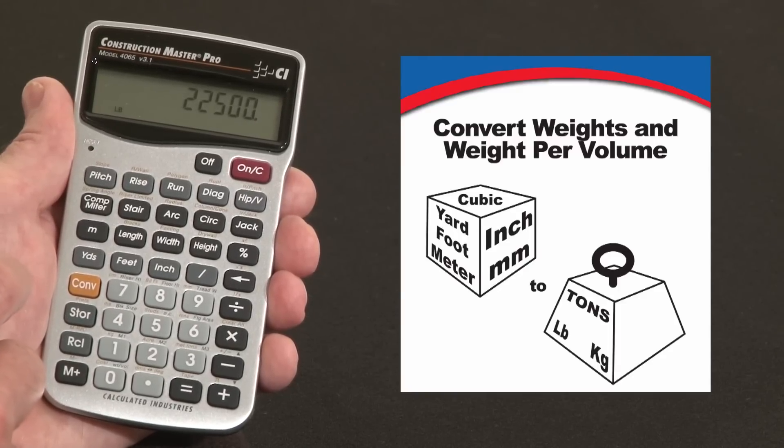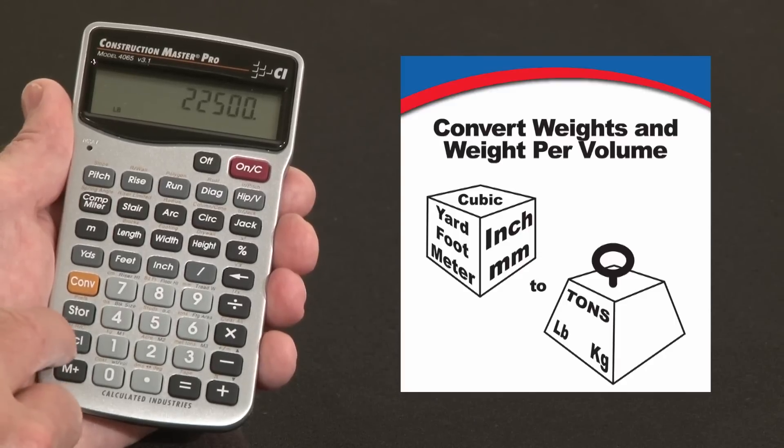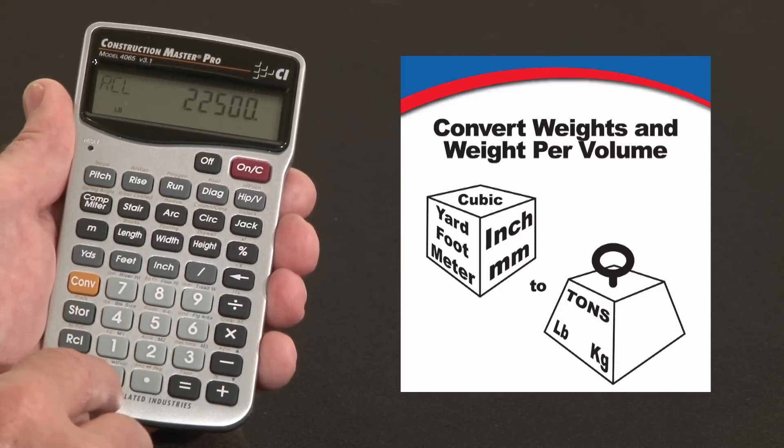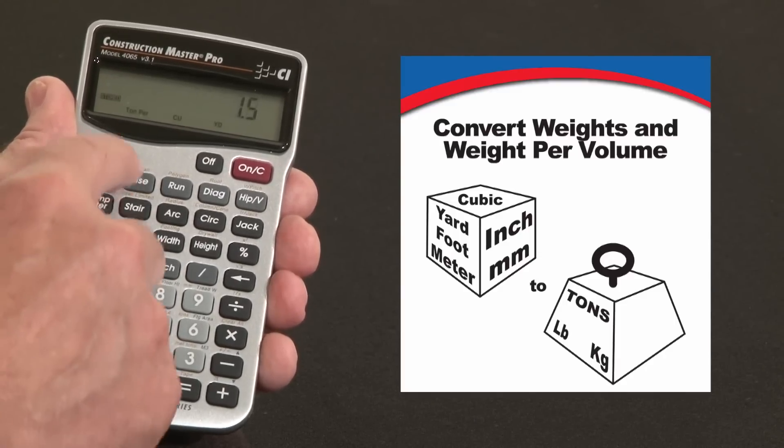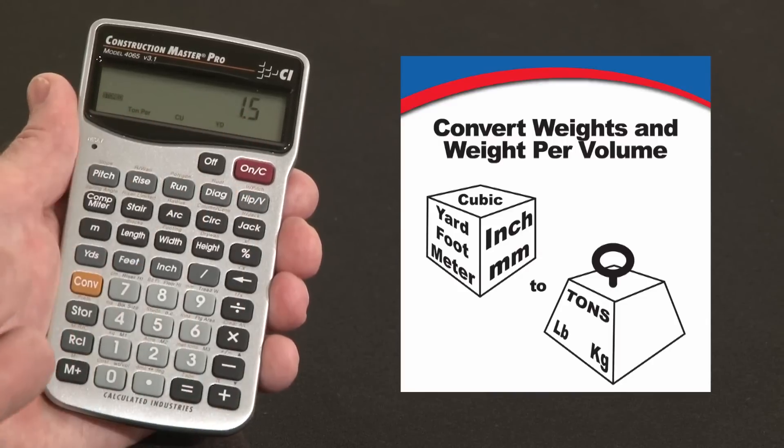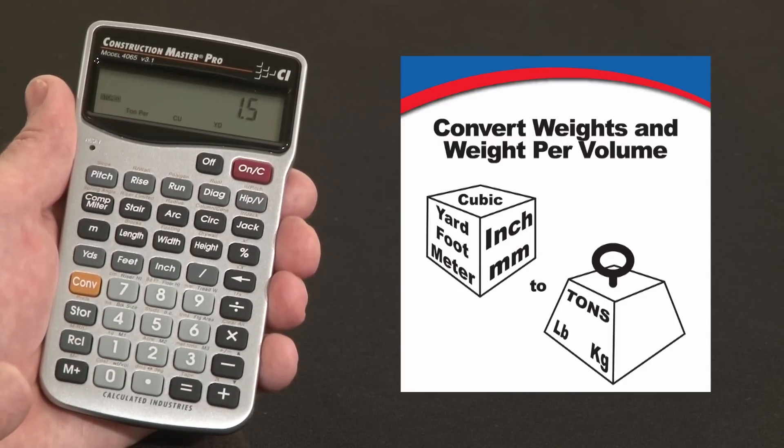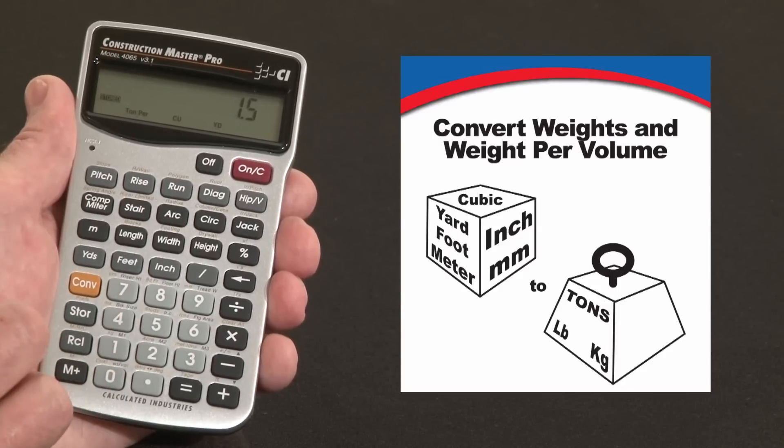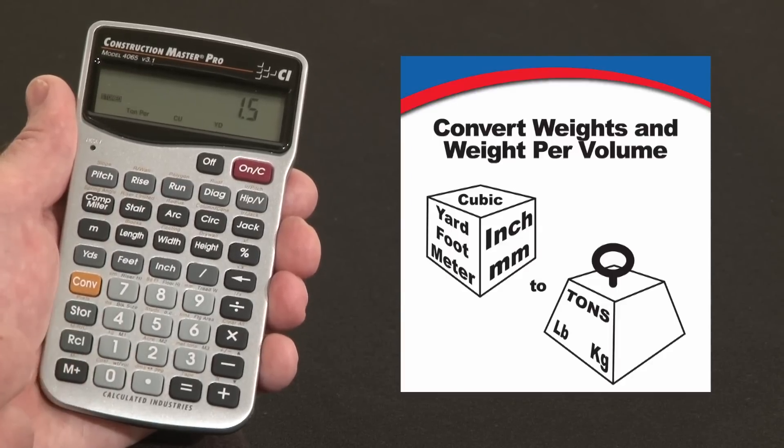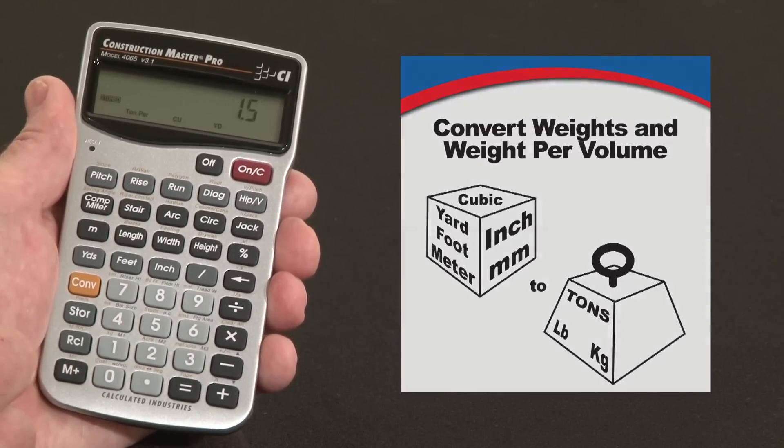That's based on the default weight per volume. You can always see that by hitting recall. Over the 0 key it says weight per volume. And our stored default is 1.5 tons per cubic yard. If you have a different material that's denser or heavier or even lighter, you can change that default very easily and recalculate your weight based on whatever volume that you need.